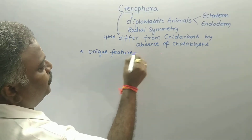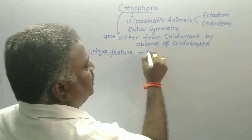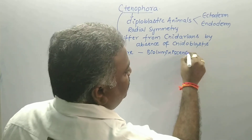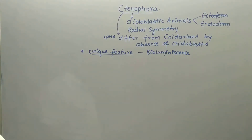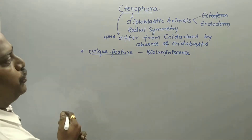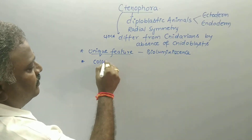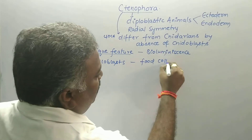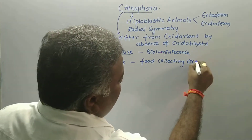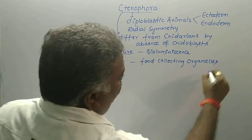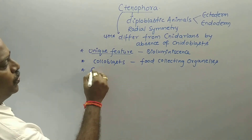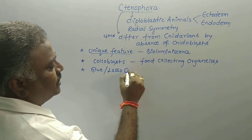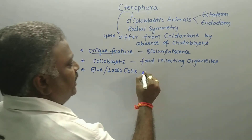Bioluminescence is a well-marked property observed in all Ctenophores. Another unique feature is coloblasts — also called glue cells or lasso cells — which are food-collecting organelles very much useful in capturing prey.